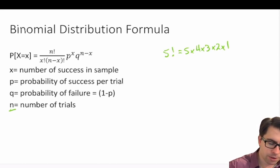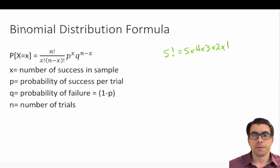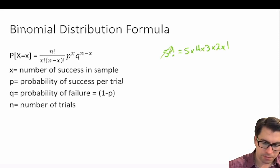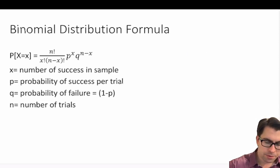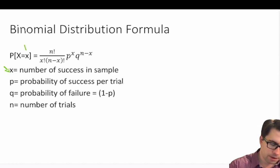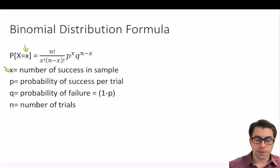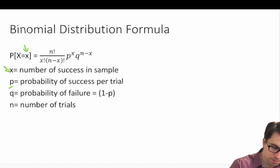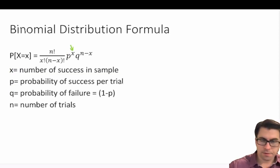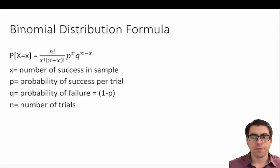You'll need to use the factorial button on your calculator because it becomes cumbersome to type out each multiplication, for example for 5 factorial. We have n factorial divided by x factorial — where x equals the number of successes or your variable of interest — times (n minus x) factorial, which is the number of trials minus the number of successes, times the probability of success p to the power of x.